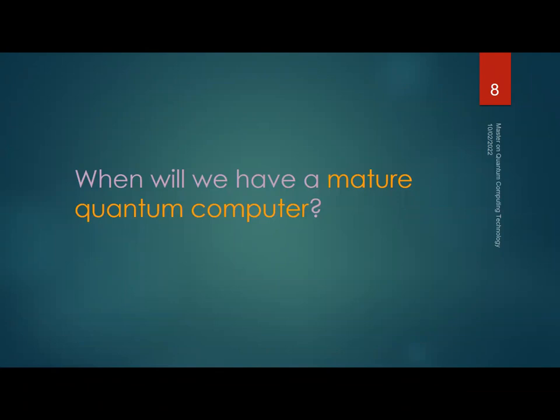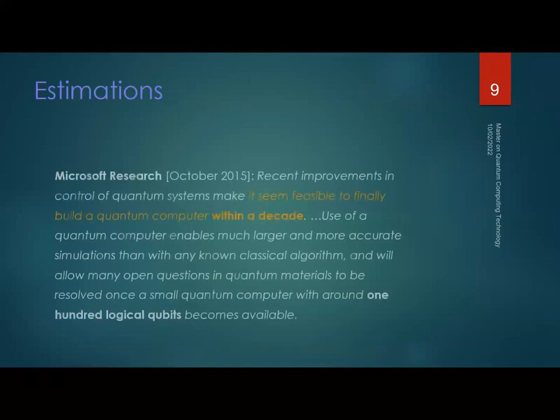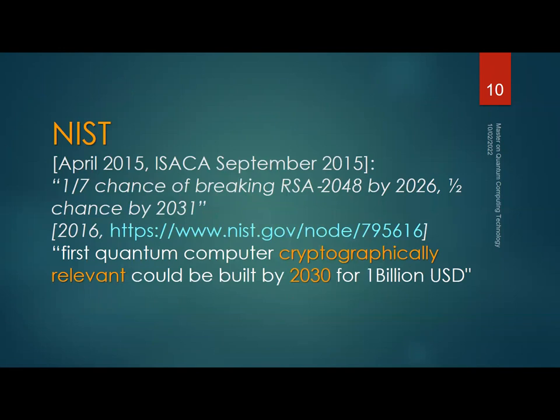When would we have a mature quantum computer that really threatens current security? There are several estimations. Microsoft in 2015 said it was infeasible to build one within a decade, so we're talking about 2025. NIST estimated a one-seventh chance of breaking RSA by 2026, and fifty percent by 2031. Another estimation suggests the first capable computer will be built by 2030.